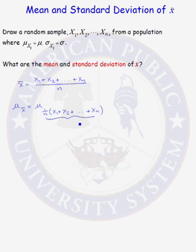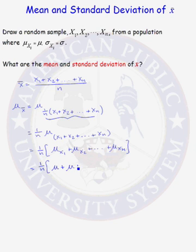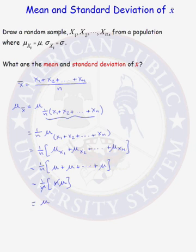This is just a linear combination of random variables. From the properties of linear combinations, the mean of a linear combination — 1 over n is just a constant, so we can bring that out in front — equals 1 over n times the mean of x1 plus the mean of x2 plus the mean of xn. The mean of x1 is mu, the mean of x2 is mu, and the mean of xn is mu. We have n of them, the n's cancel, and we have that the mean of x-bar is equal to the mean of our parent population, mu.